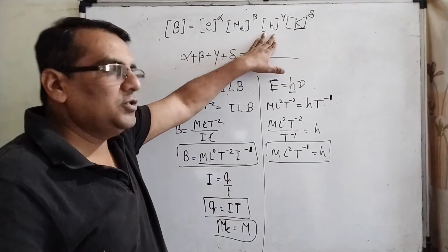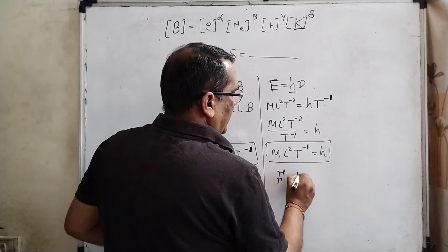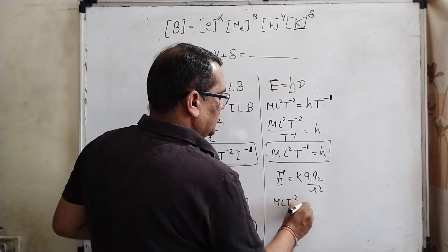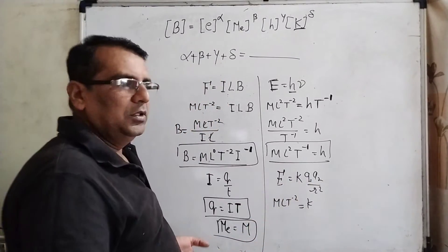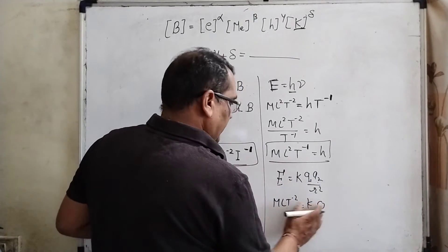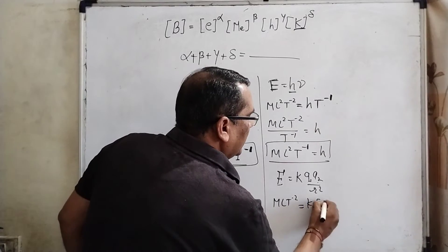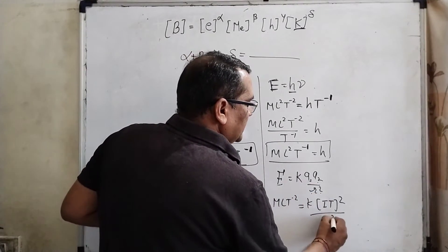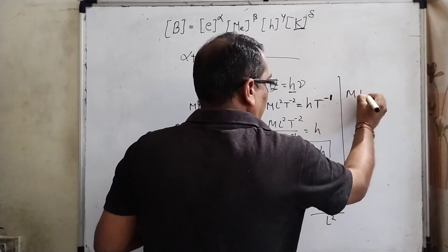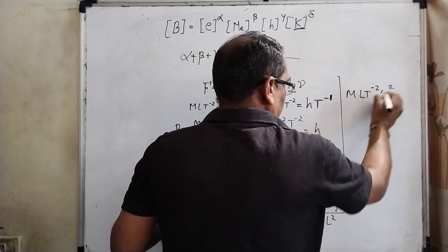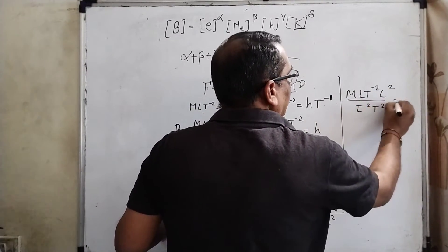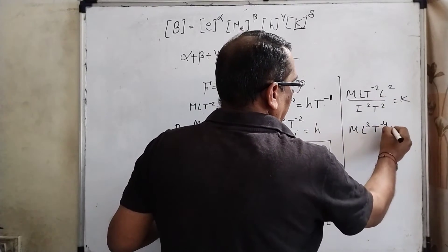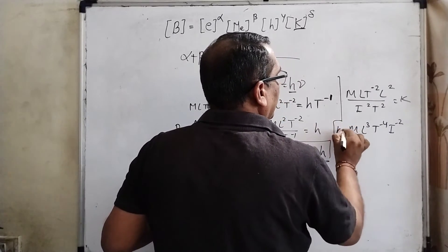Finally, for Coulomb's constant k, we use Coulomb's force: F = k Q₁Q₂ / R². Force has dimensions M L T⁻², charge squared Q₁Q₂ has dimensions (IT)² = I² T², and R² has dimensions L². So [k] = M L T⁻² × L² / (I² T²) = M L³ T⁻⁴ I⁻².